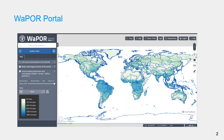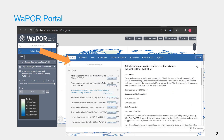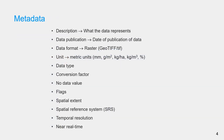First of all, you can find information about data format and metadata of all WAPOR data layers in the WAPOR portal. When selecting a data component, you will find in the description box all the metadata information. Here is the list of the metadata information you can find there.